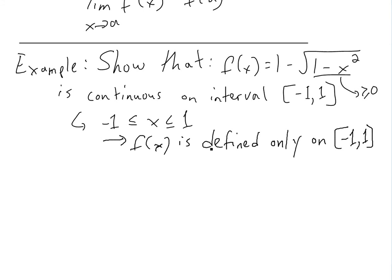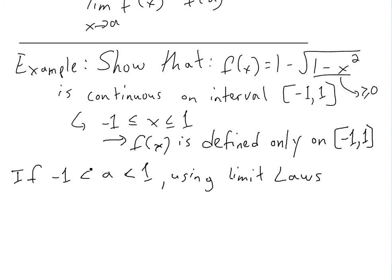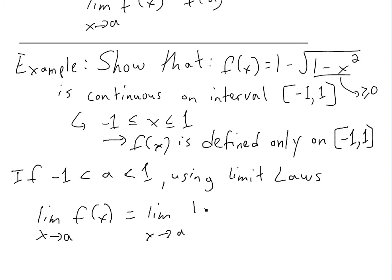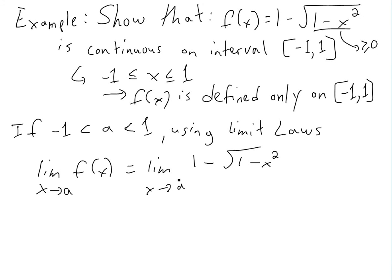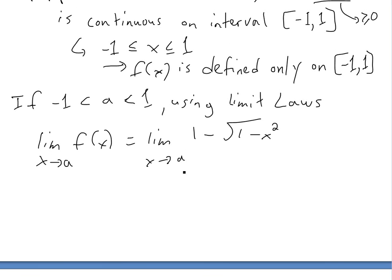f(x) is defined only on this interval. Now, if we look at the interior interval where -1 < a < 1, excluding the endpoints, and using the limit laws — see the video links below for those — we can find this limit for any a in between. So the limit as x approaches a of f(x) equals the limit as x approaches a of 1 - √(1 - x²). Using laws 2 and 7, we can break this apart.